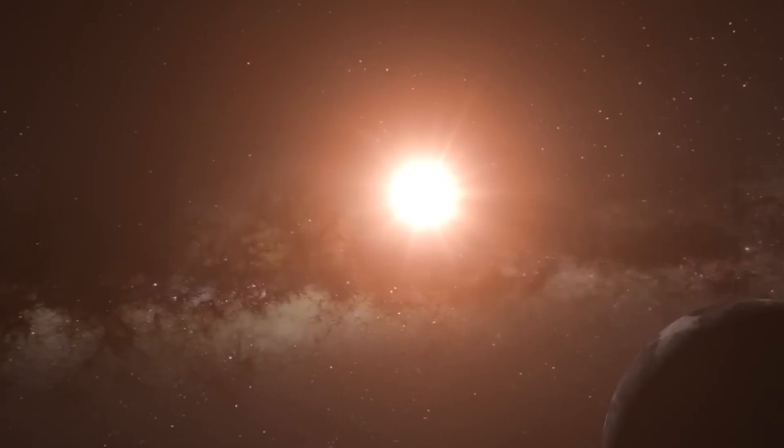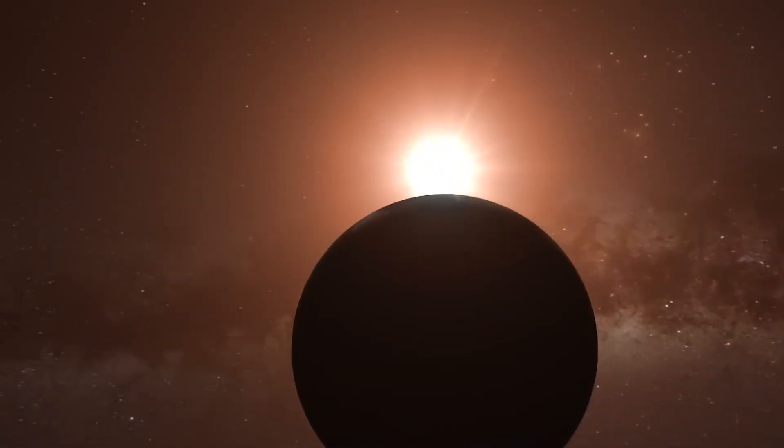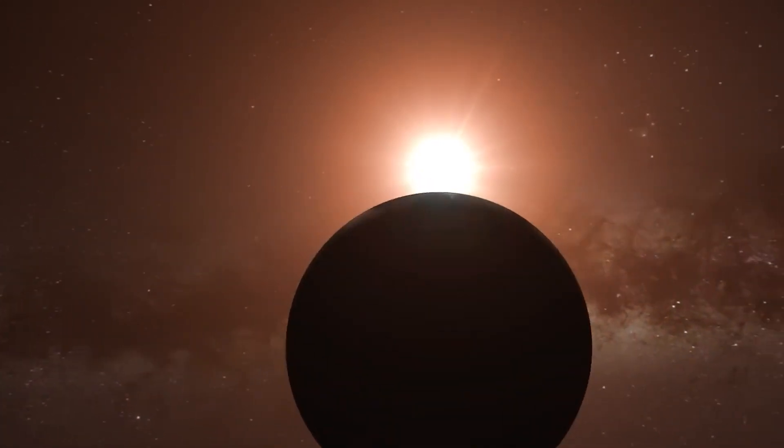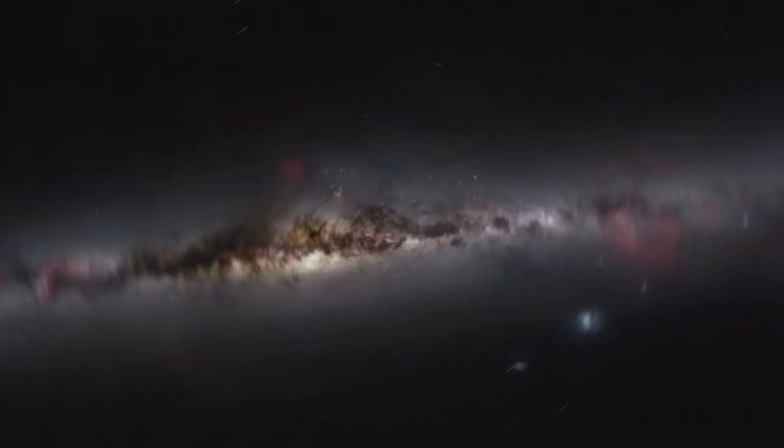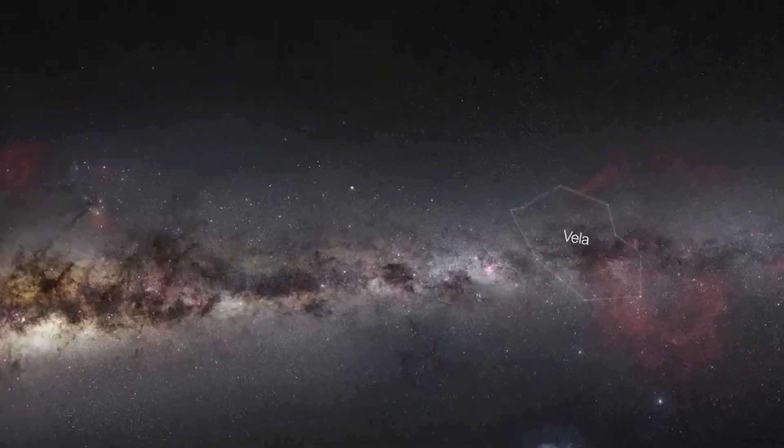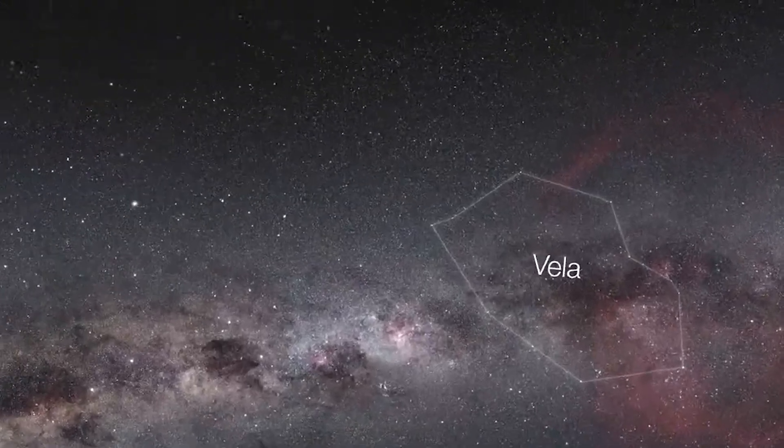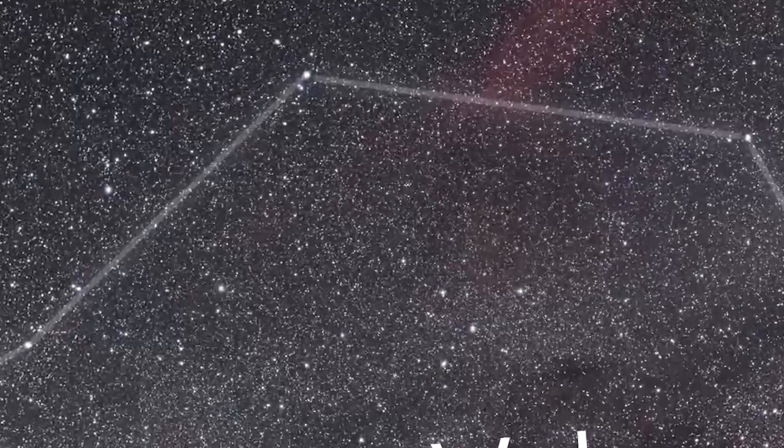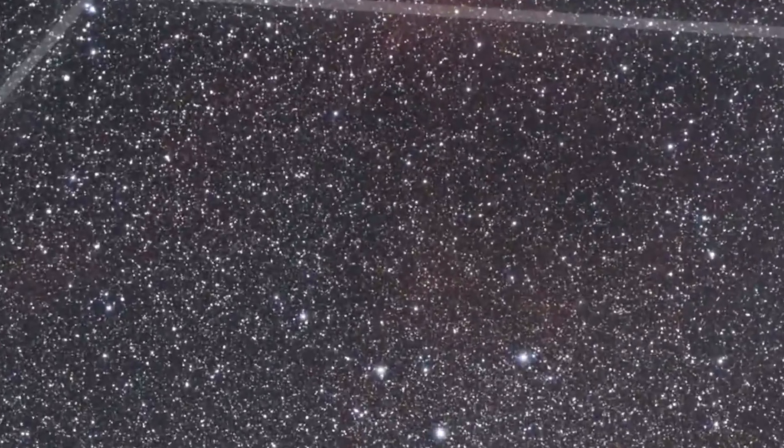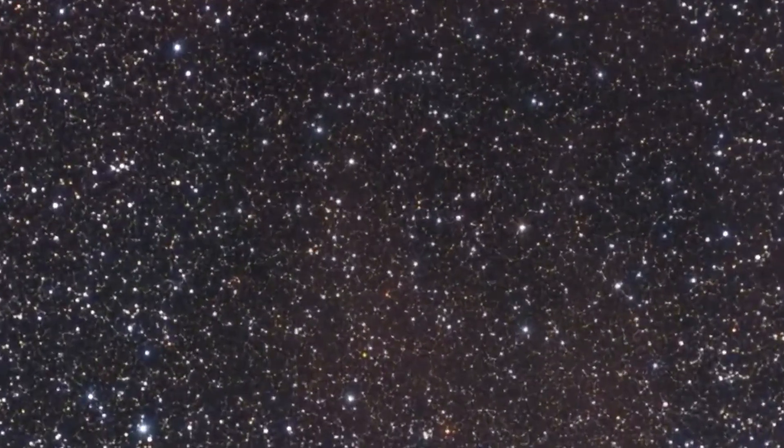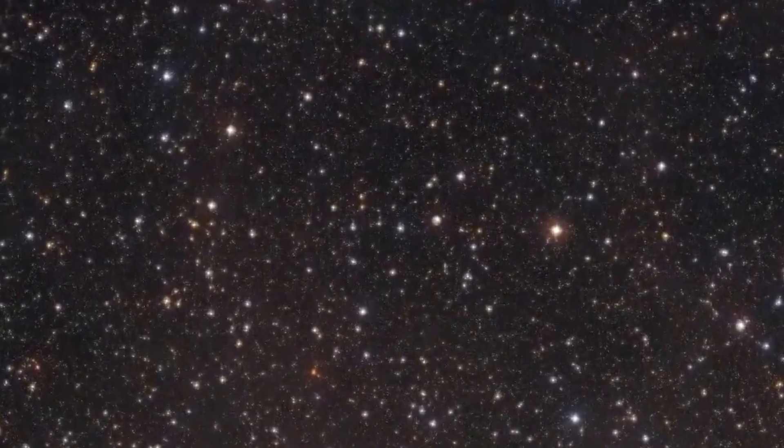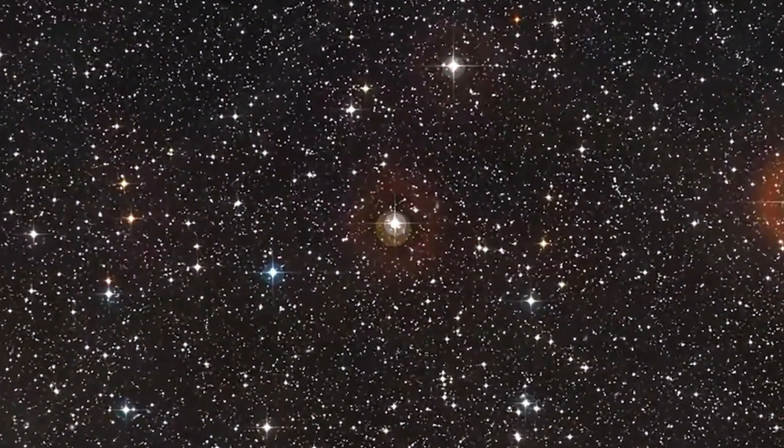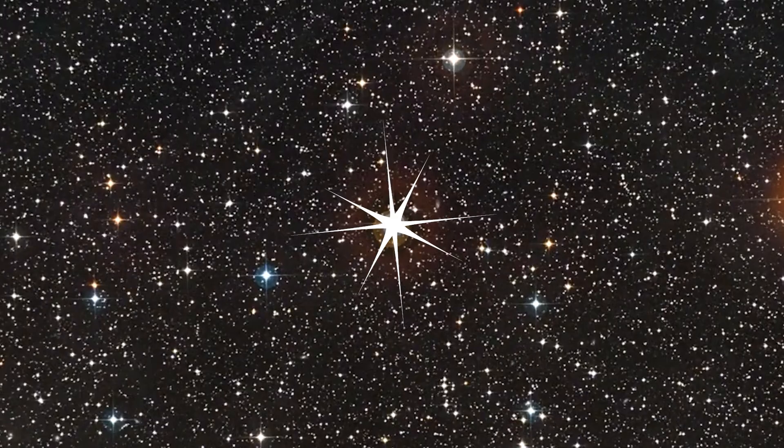The discovery of Proxima b was announced in 2016, which raises the question of why this particular exoplanet has generated so much interest. One of the reasons is that Proxima b is the closest known star to our sun, albeit at a distance of 4.2 light years, which, while large to us, is relatively short on a cosmic scale. It is part of the triple star system known as Alpha Centauri, and despite its low luminosity, remains an object of great interest to astronomers.